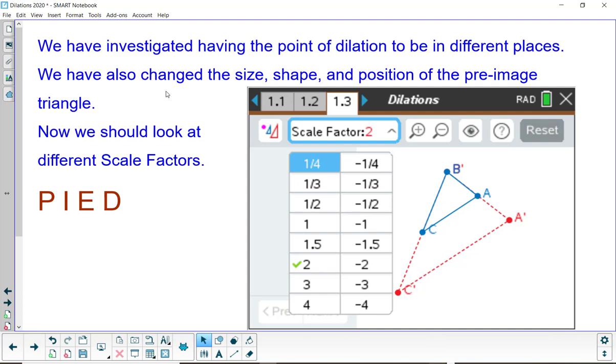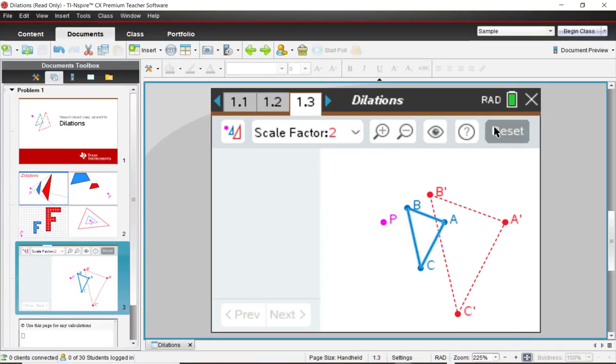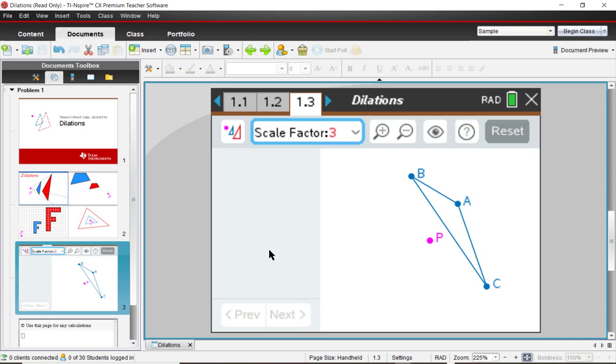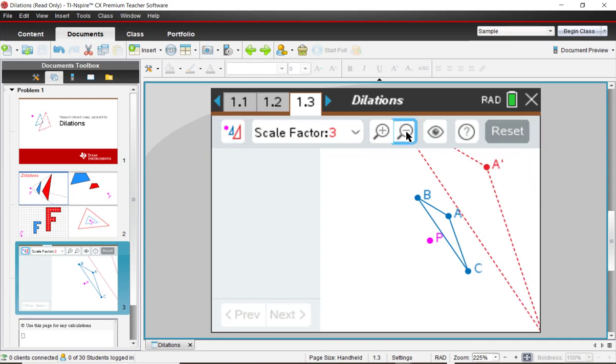So far we've investigated moving the point of dilation and changing the size, shape and position of the pre-image triangle. Let's look at different scale factors and see if this holds true for other scale factors other than 2. Alright, I'm going to click on reset. And here's where I get to change the scale factor here. So I change the scale factor to 3 instead of 2. I'll go ahead and dilate the triangle about point P, scale factor of 3. So I need to zoom a little bit here.